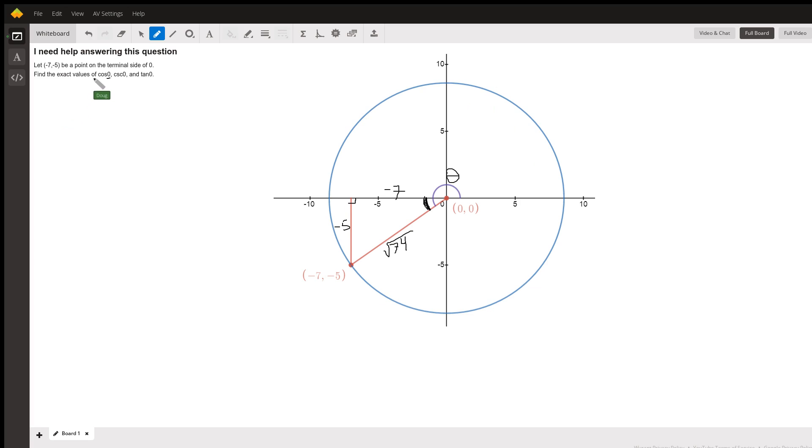But if we want to find the cosine of theta, that's the same as finding the cosine of this reference angle, which is adjacent over hypotenuse. So the cosine of theta is negative seven over the square root of 74. Now some teachers might require you to rationalize the denominator by multiplying numerator and denominator by the square root of 74. So we'll say that the exact value for the cosine of theta is negative seven radical 74 over 74.